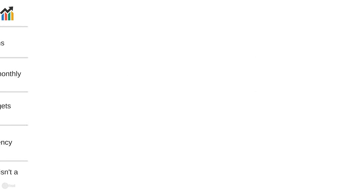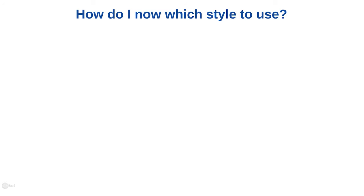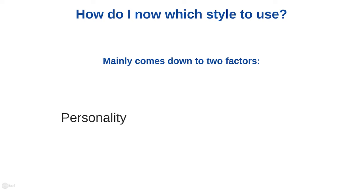So you may be thinking: how do I know what style to use? This comes down to a couple of factors. The first is your personality. You may be someone who likes a lot of time to approach the markets, and so scalping is probably not for you. Or you may be the opposite — you may really struggle to hold on to trades for prolonged periods of time, and so swing trading may not be for you. The second factor is your lifestyle. You may not have the time available to day trade, and so scalping, where you can sit down for an hour or two, may be more suitable. Or even swing trading, by looking at the markets for a short period of time on a morning and on an evening.